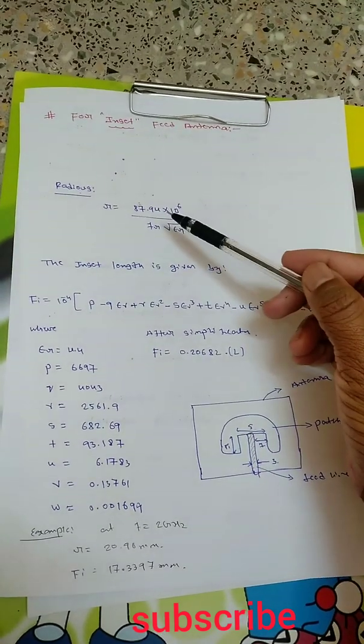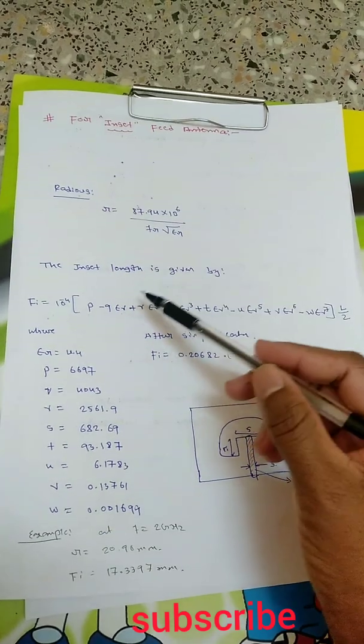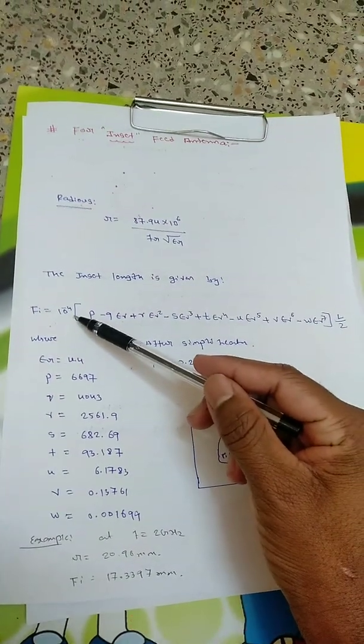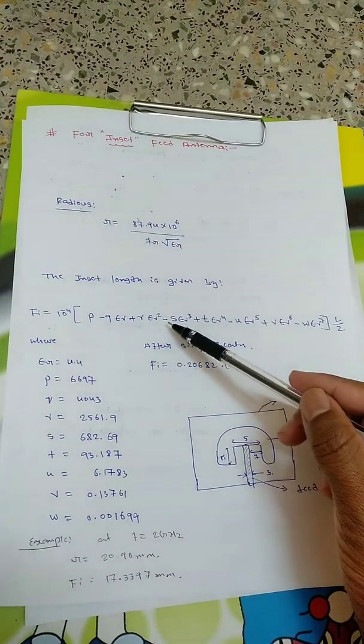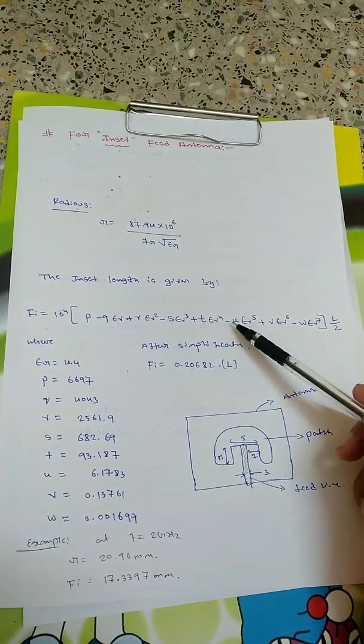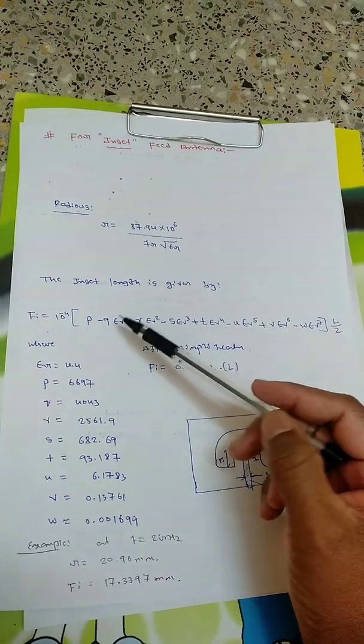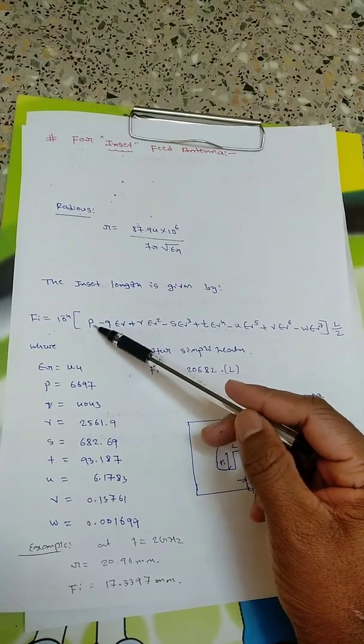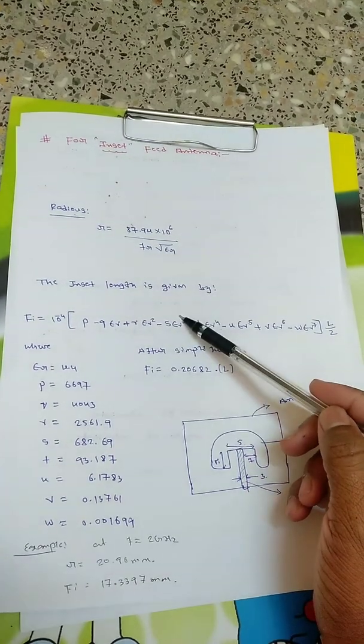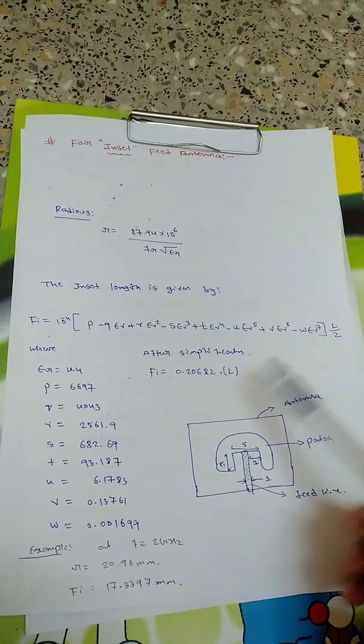Radius is again the same: 87.94 x 10 to the power 6 divided by f_r x epsilon_r. The insert length formula is 10 to the power minus 4 times [p minus q epsilon_r plus r epsilon_r squared minus s epsilon_r cubed plus t epsilon_r to the power 4]. It alternates plus minus plus minus: p, q, r, s with epsilon_r to the power 0, 1, 2, 3. Like this you can remember easily, multiplied by L by 2 at the end.